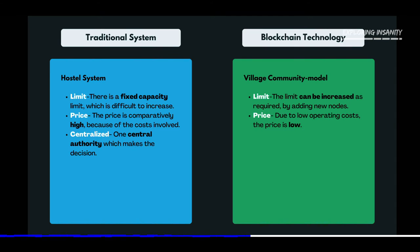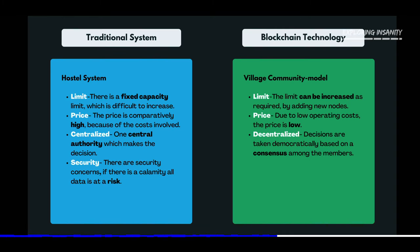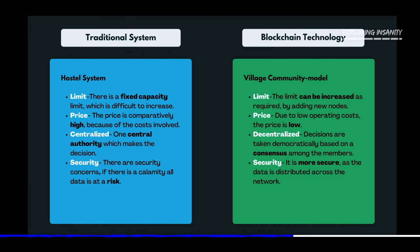Third, centralization: the traditional system is centralized and the authority to make decisions lies in the hands of one single party or organization. Whereas in blockchain technology, it is decentralized and decisions are made based upon consensus or majority. Fourth, security: in traditional systems there are security concerns — in case of a hack, all data is at risk. Whereas in blockchain, it is comparatively more secure, mainly because of the consensus mechanism and the data being distributed across the network.